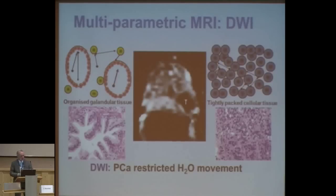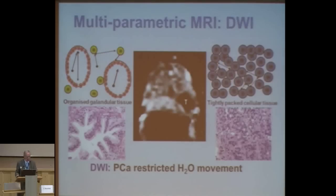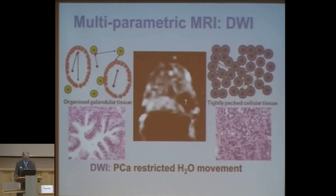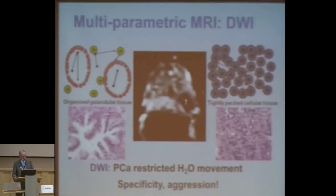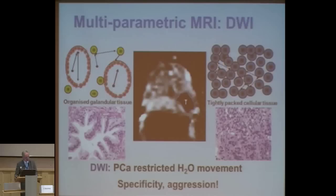On the image — the so-called apparent diffusion coefficient map, ADC map — the color is black and the value is below 950 to 900. This is a very nice technique to show where the tumor is. As you will see later, it shows specificity about aggression. So it's a very highly specific technique.